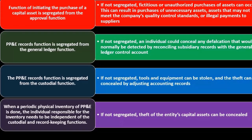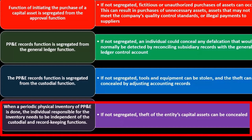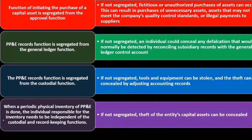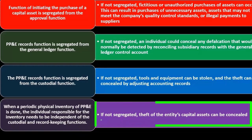When a periodic physical inventory of property, plant and equipment is done — and this should happen periodically — the individual responsible for that inventory needs to be independent of both the custodial and record-keeping functions. PP&E has a physical presence similar to inventory, though we may not count it as often due to its size. If this is not segregated, theft of the entity's capital assets can be concealed.